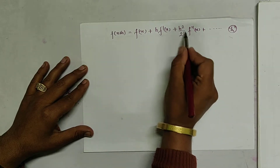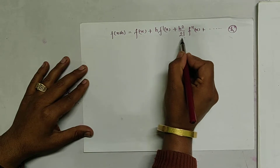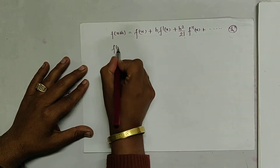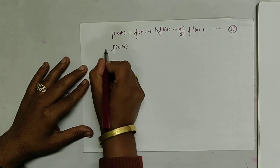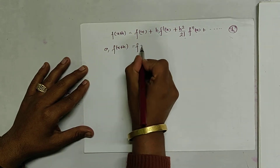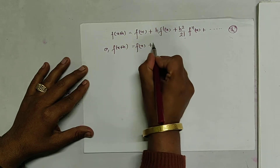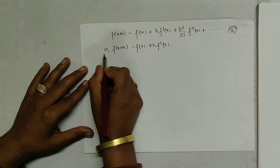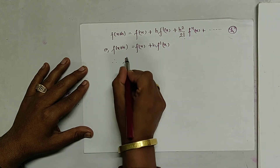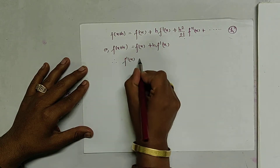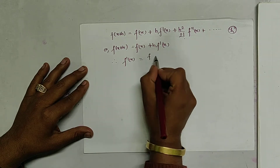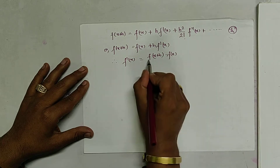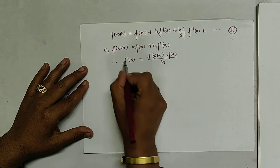This is the Taylor series. By taking the lower power of h and neglecting the higher power of h, since h is a very small value, we neglect those terms and we get f(x+h) equals f(x) plus h·f'(x).